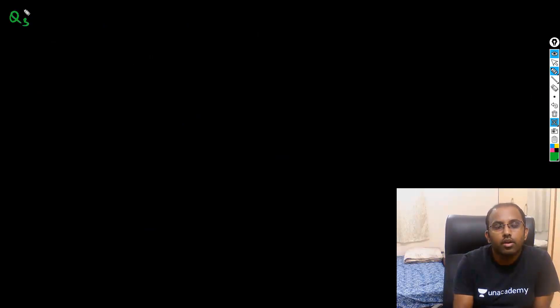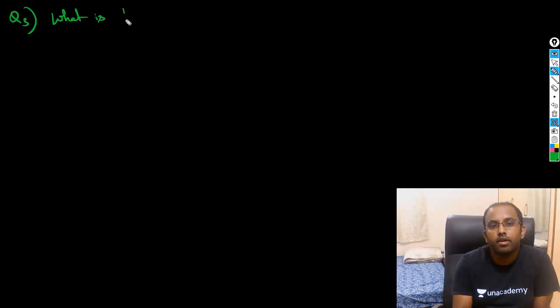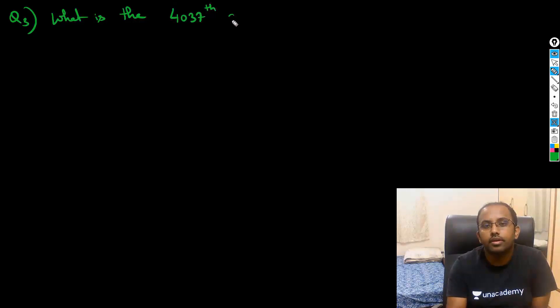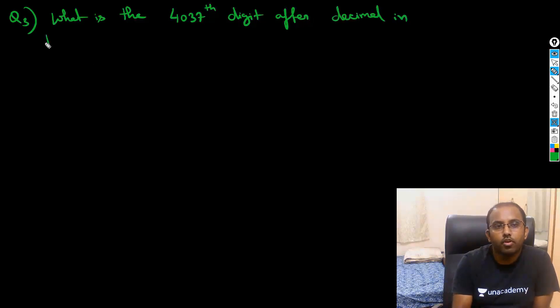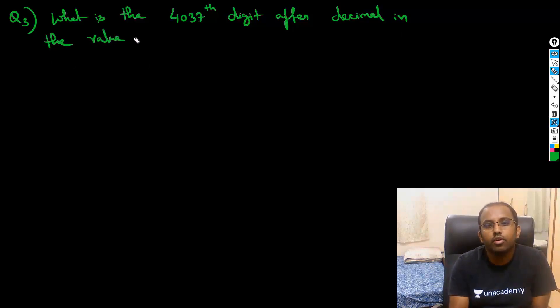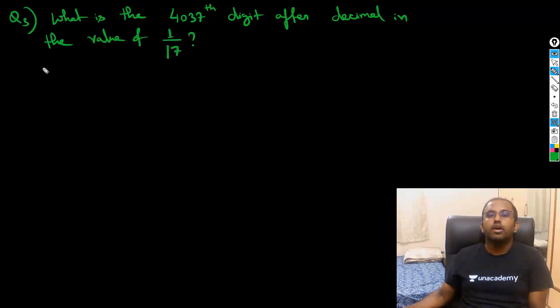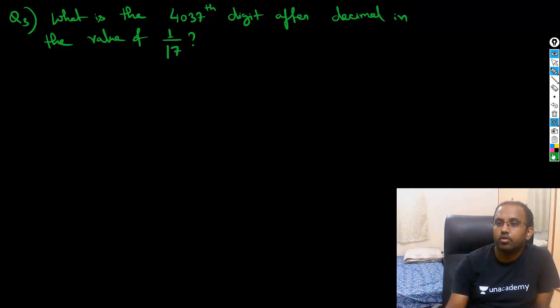Question 3: What is the 4037th digit after the decimal in the expansion of 1 by 17?